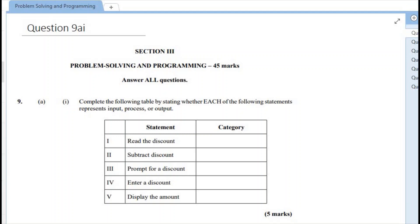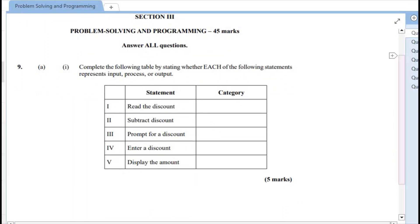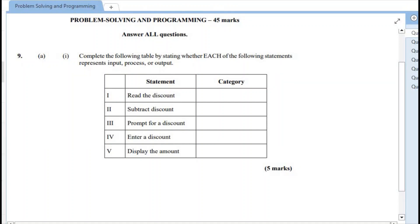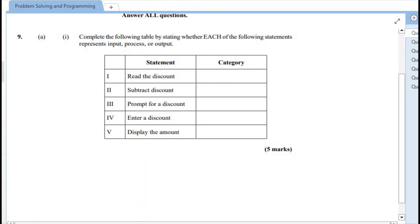Question 9a provides us with a diagram, and in this diagram it says that we are to complete the table by stating whether each of the statements represents an input, a process, or an output. Alright, so the first one says read the discount, and read in our problem solving and programming aspect refers to an input.